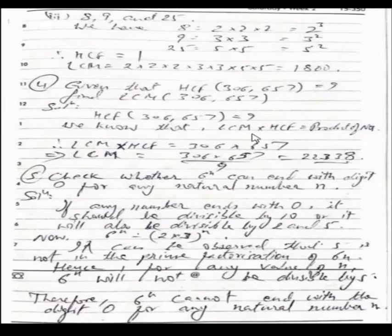HCF is 9. We know that the product of LCM and HCF is product of the numbers. So LCM into HCF is 306 into 657. LCM is equal to 306 into 657 divided by HCF which is 9. So the LCM is 22338.